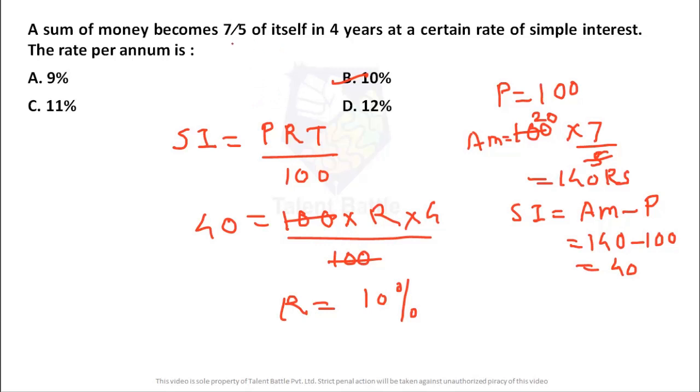So answer for this question is B, 10%. So just make sure whenever they will give you questions like 2 times of itself, 3 times or like 7 by 5 times, consider principal as 100. Calculate the amount, then calculate the simple interest. Just put the values and then you will get the answer.